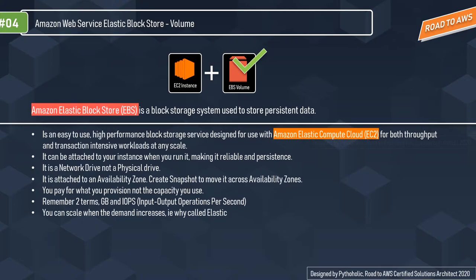Amazon Elastic Block Storage, or EBS, is a block storage system used to store persistent data. It's an easy-to-use, high-performance block storage service designed for use with Amazon EC2, for both throughput and transaction-intensive workloads at any scale. It can be attached to your instance when you run it, making it reliable and persistent. It is a network drive — not a physical drive — provisioned as per your needs, and it is attached to an availability zone.